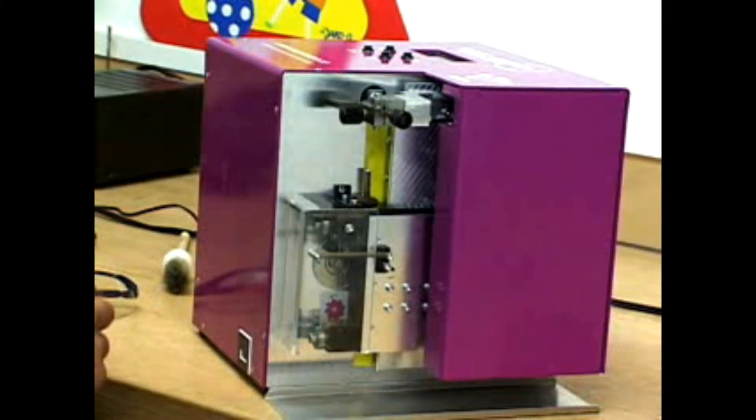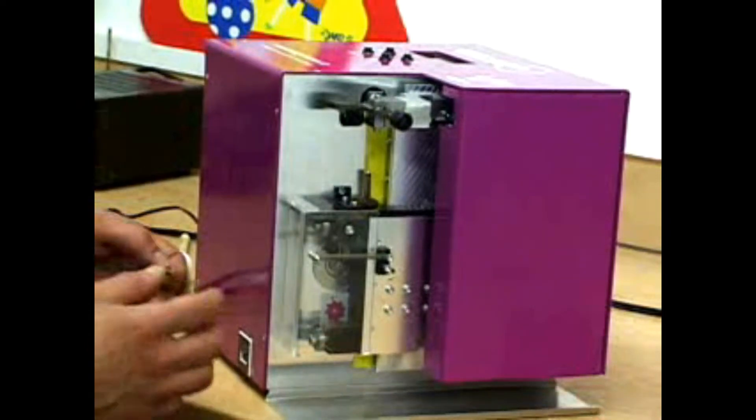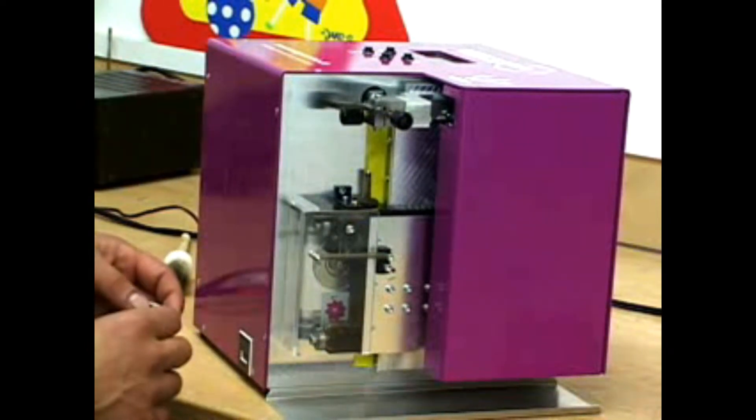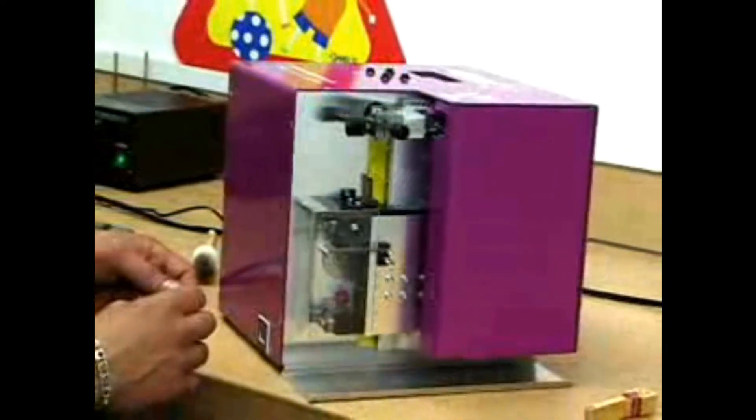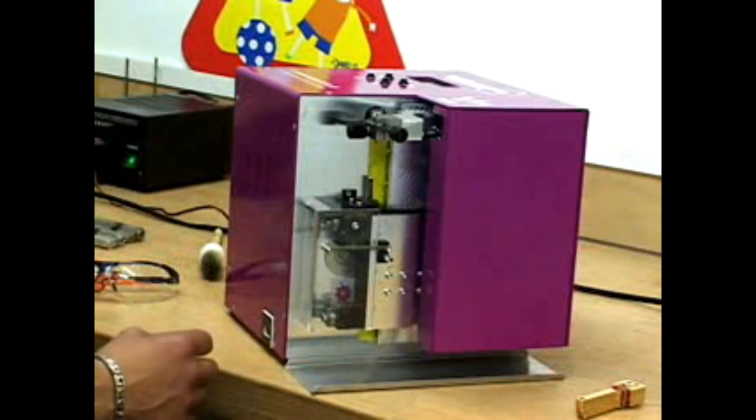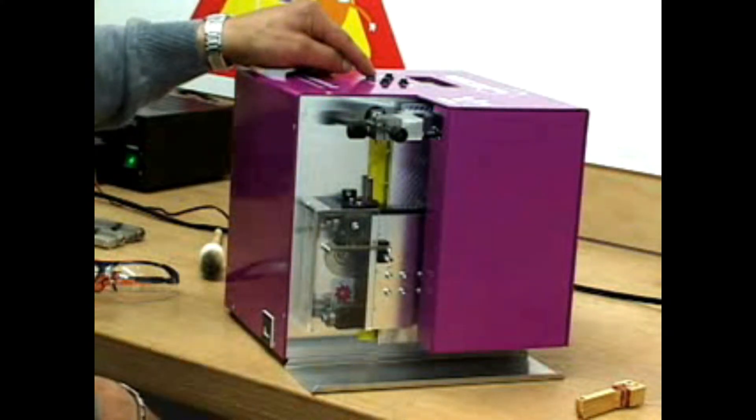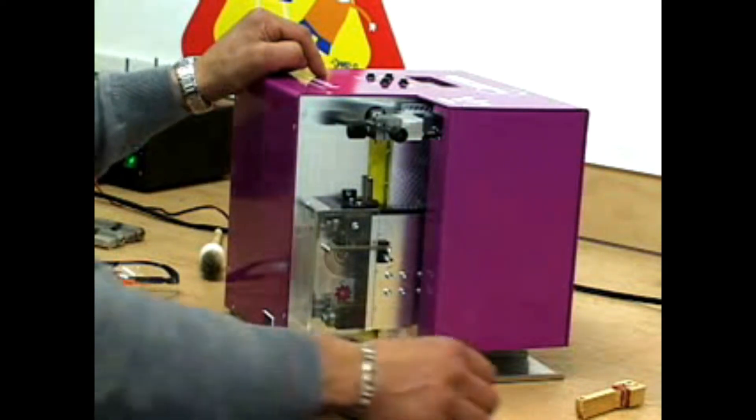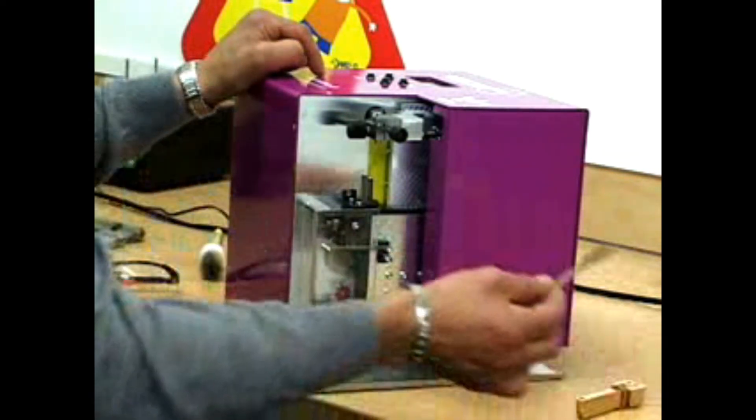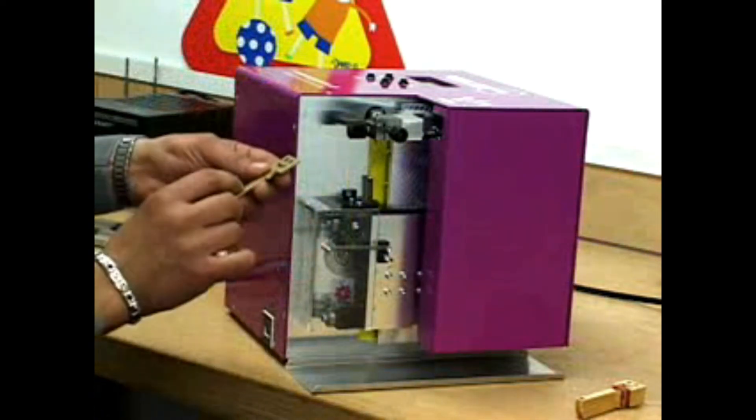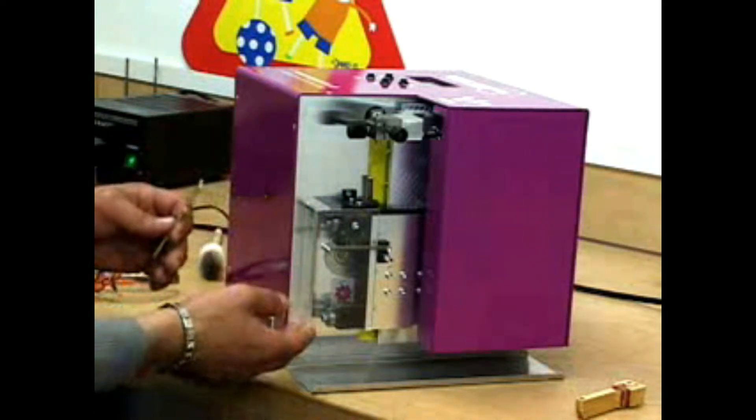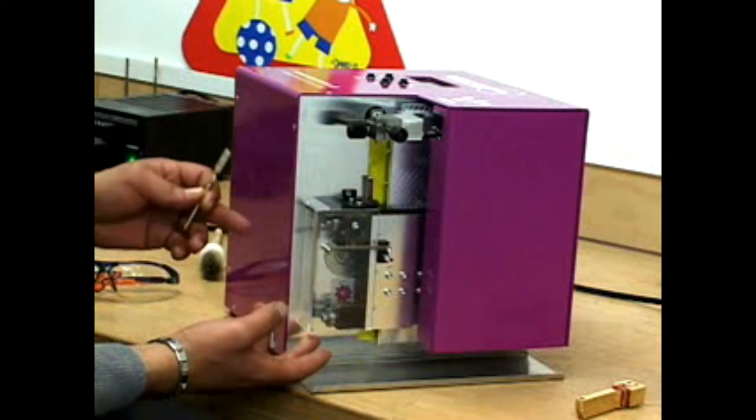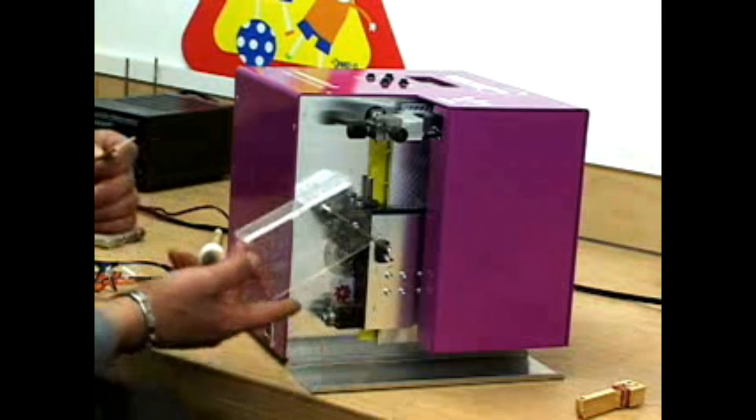The next step is that it shows me exactly the width and the height from the key and tells me which kind of key blank I must use to make the copy of this key blank. It's number 25. I lift up the protection shield.